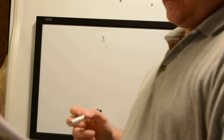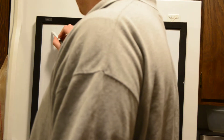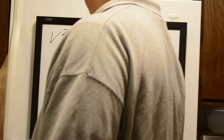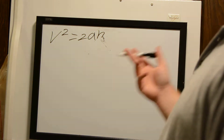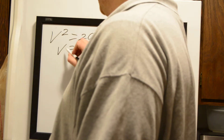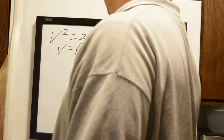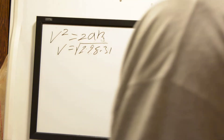The formula we want to use here is v² = 2 times acceleration times height. We can assume the acceleration is the acceleration of gravity, 9.8 m/s². So the velocity equals the square root of 2 times 9.8 meters per second squared times the 3.1 meters height of the platform.